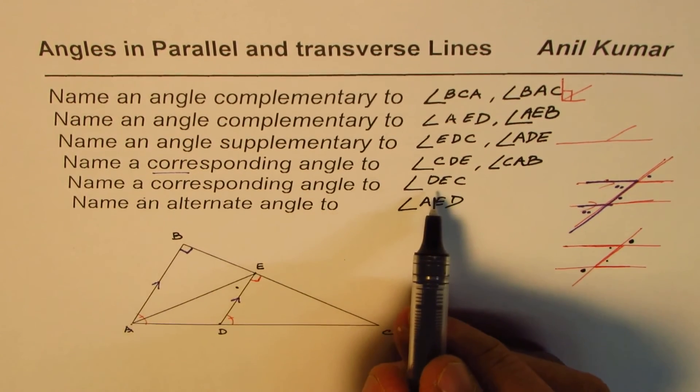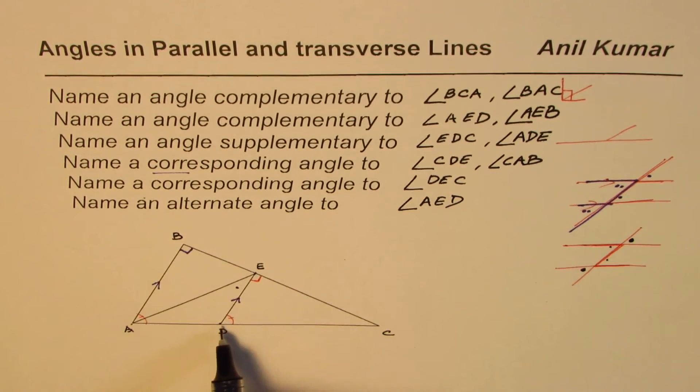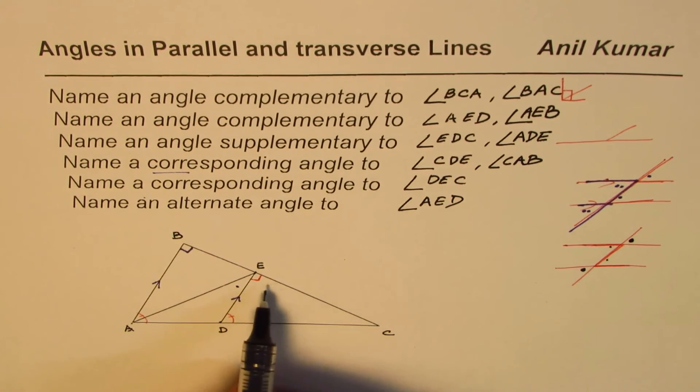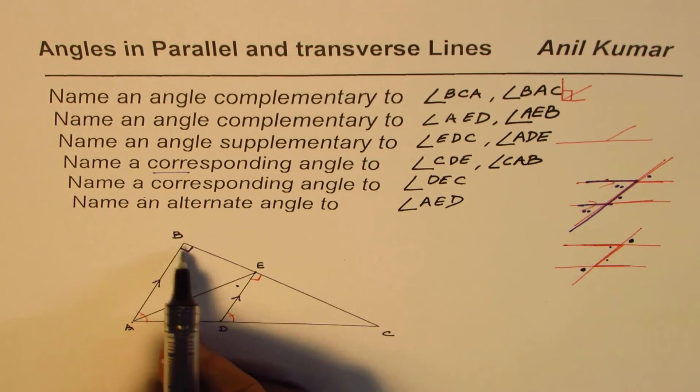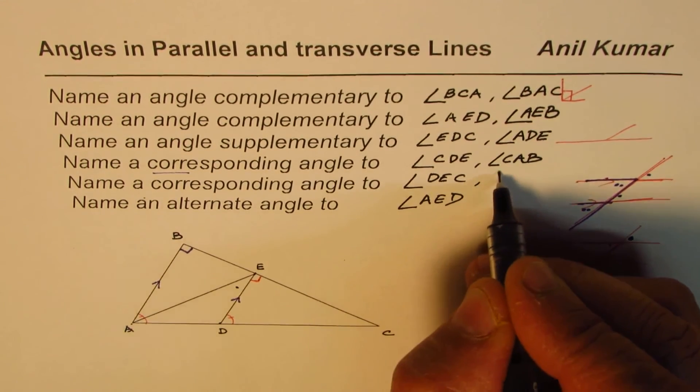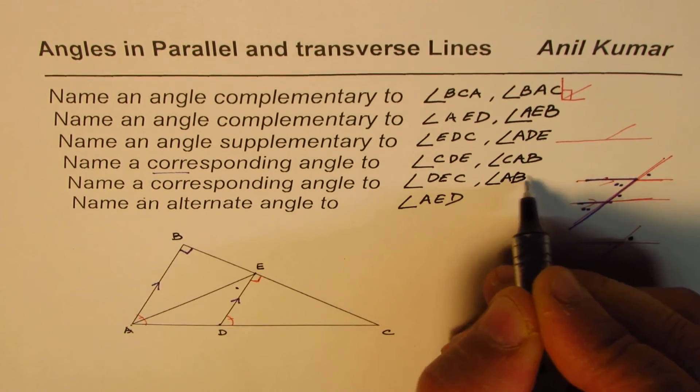Then the corresponding angle to DEC, D, E, and C, going to that place, we know that is same as ABC okay. So this is angle ABC.